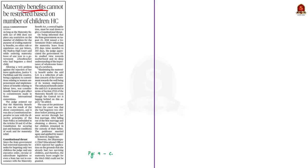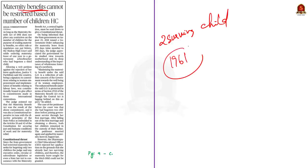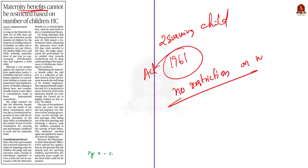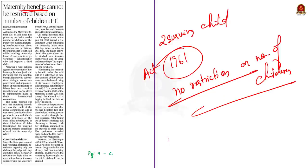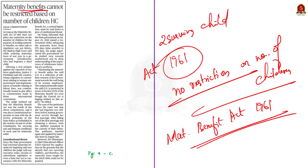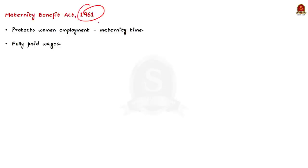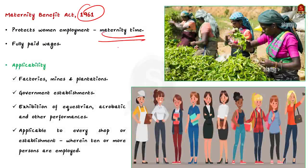The leave was rejected on grounds that the particular person already had two surviving children. However, the Madras High Court said that as long as the Maternity Benefit Act of 1961 does not place any restriction on the number of children for the purpose of availing maternity benefits, no other rule or regulation can put restrictions for availing the benefit. Taking this as an opportunity, we will learn about the Maternity Benefit Act 1961.